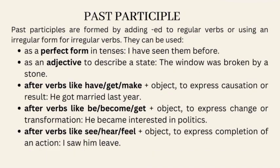Past participles are formed by adding -ed to regular verbs or using an irregular form for irregular verbs. They can be used as a perfect form in tenses, e.g. present perfect — 'I have seen them before.' As an adjective to describe a state, e.g. broken — 'The window was broken by a stone.' After verbs like have/get/make plus object, to express causation or result — 'He got married last year.' After verbs like be/become/get plus object, to express change or transformation — 'He became interested in politics.'